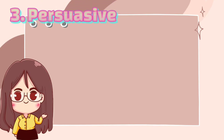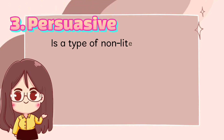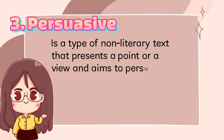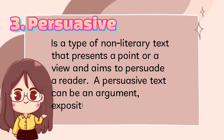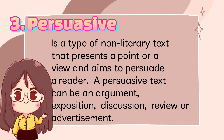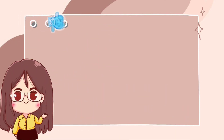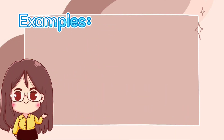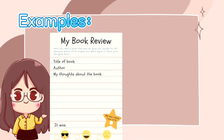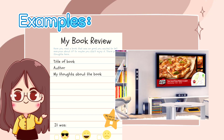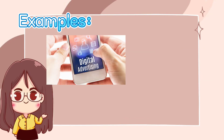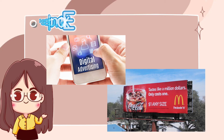And lastly, we have persuasive. Persuasive is a type of non-literary text that presents a point or a view and aims to persuade a reader. A persuasive text can be an argument, exposition, discussion, review, or advertisement. The following are examples of persuasive text: book review, TV ads, digital ads, and billboard.